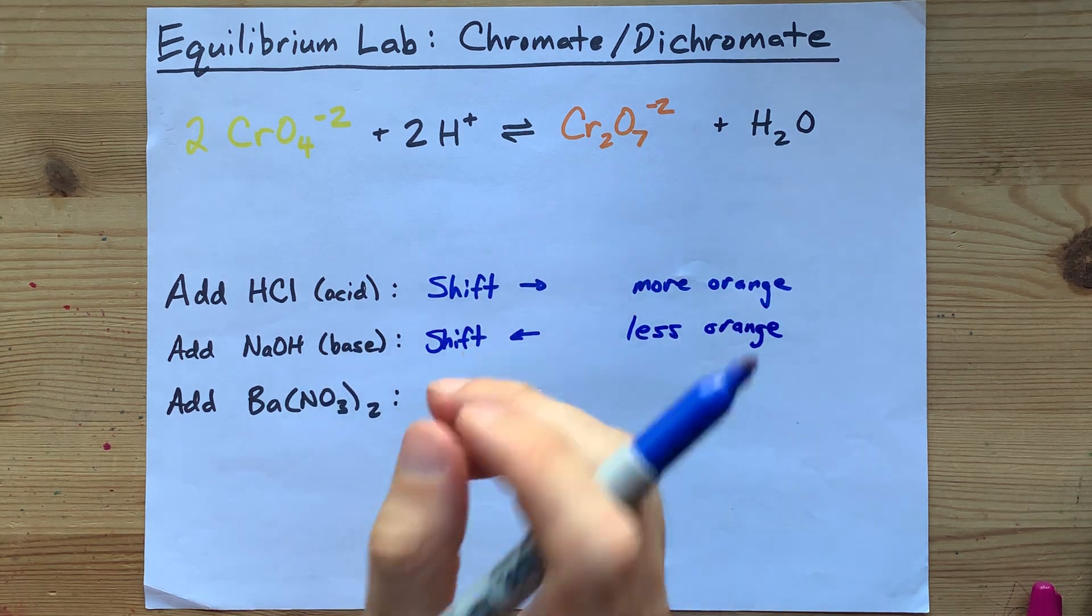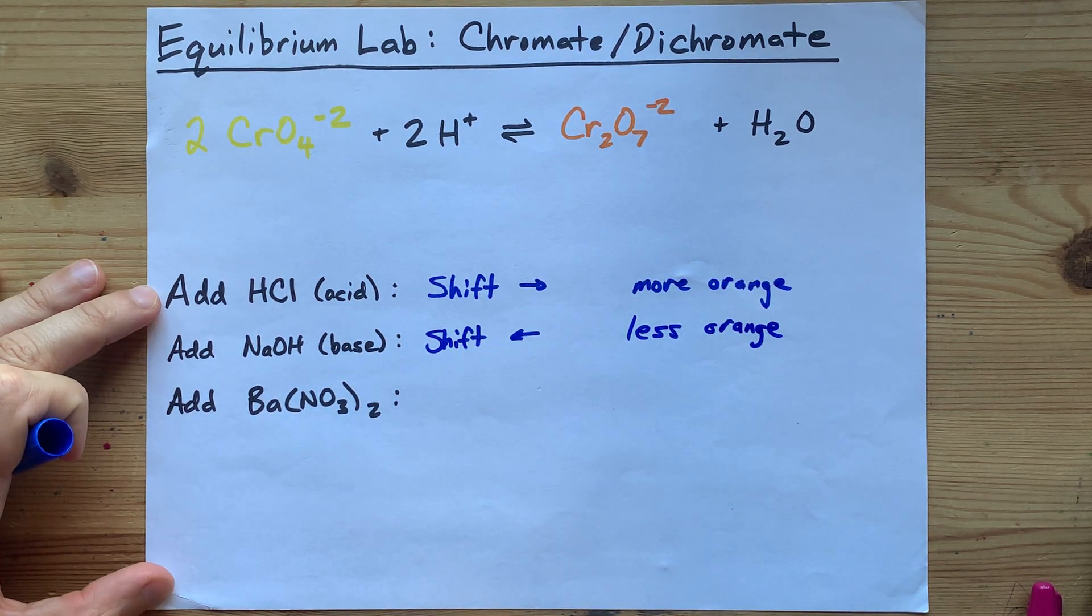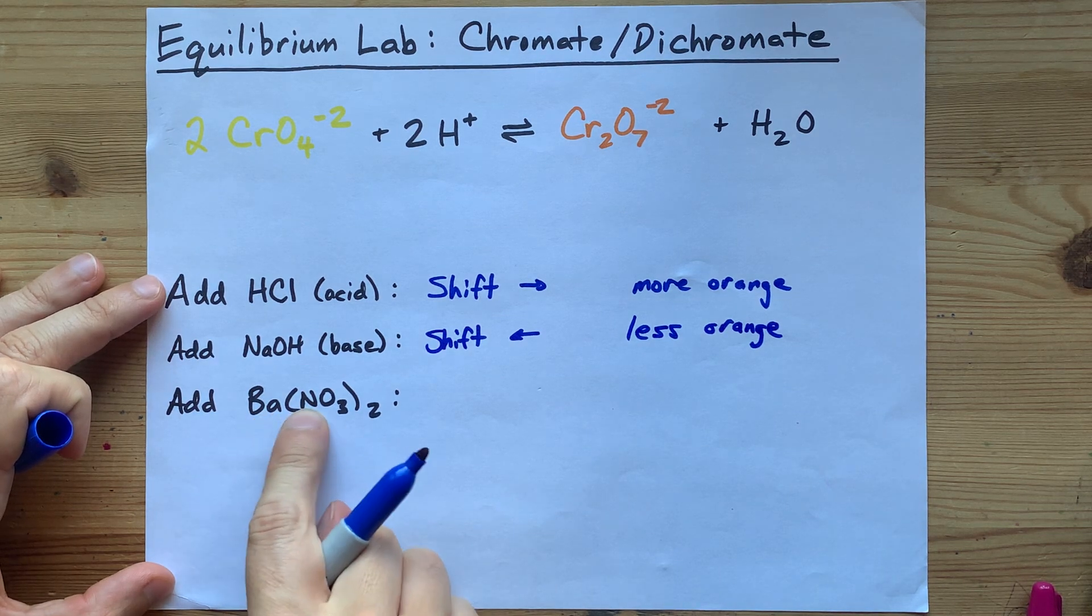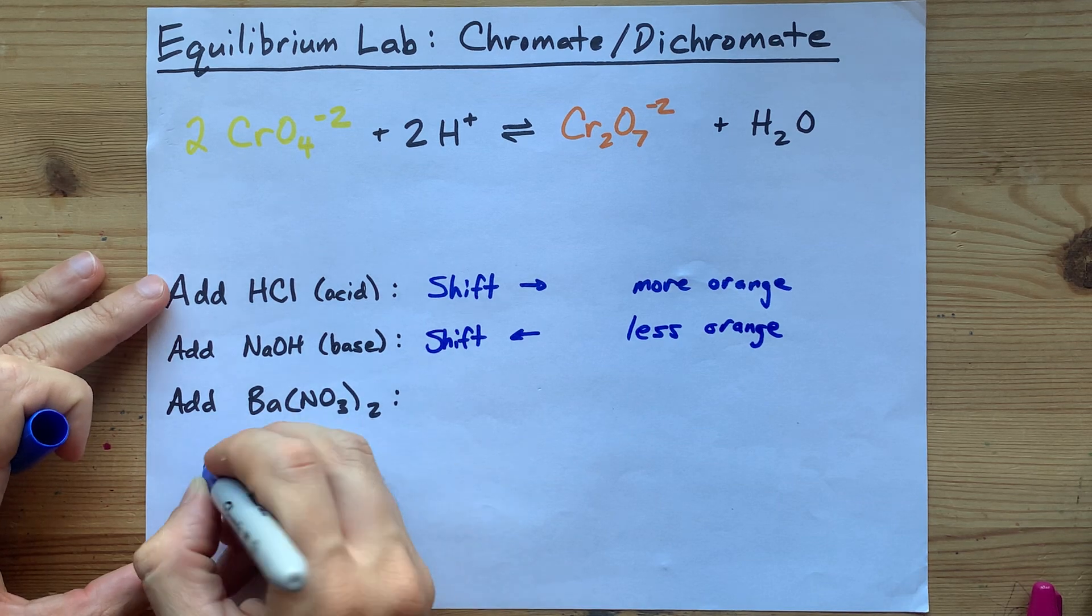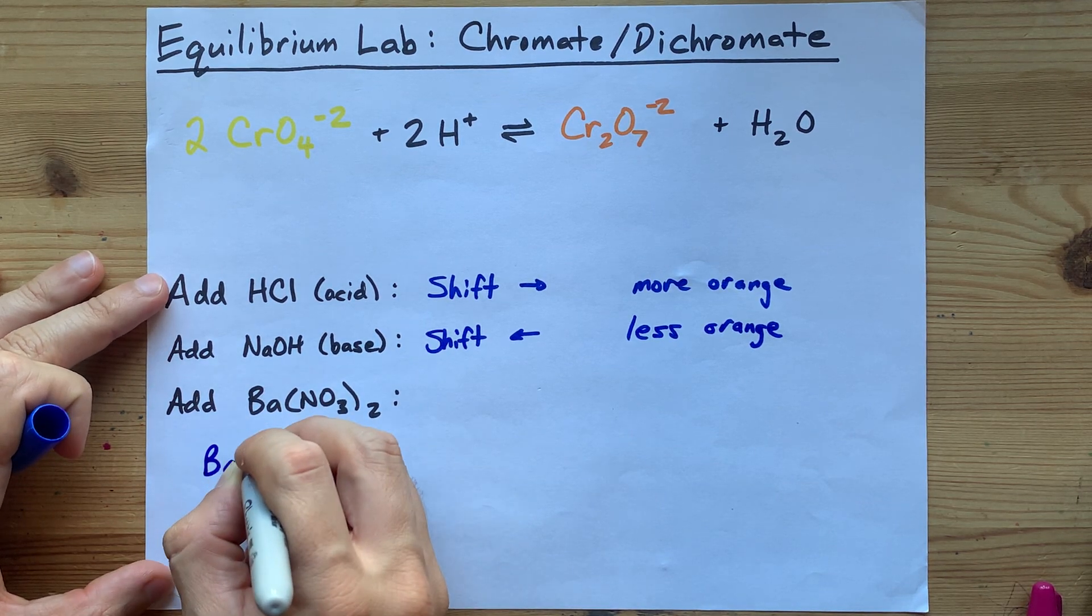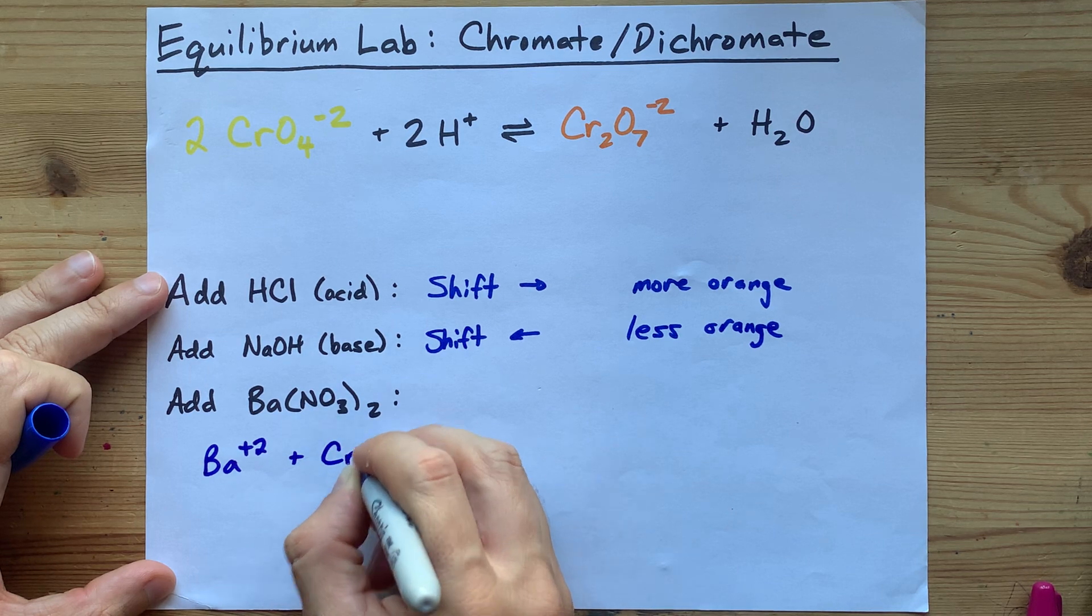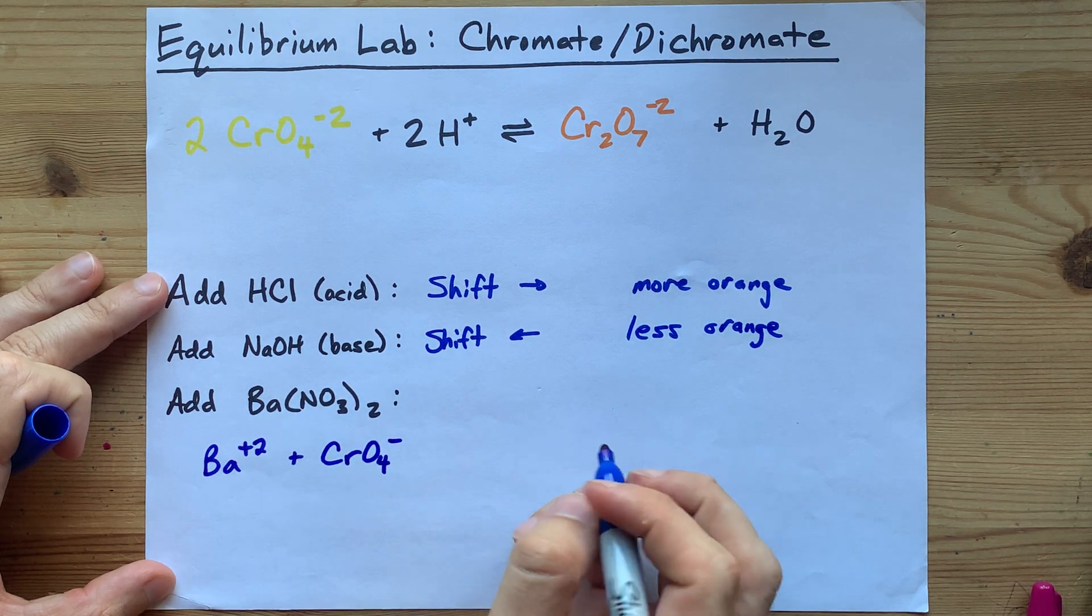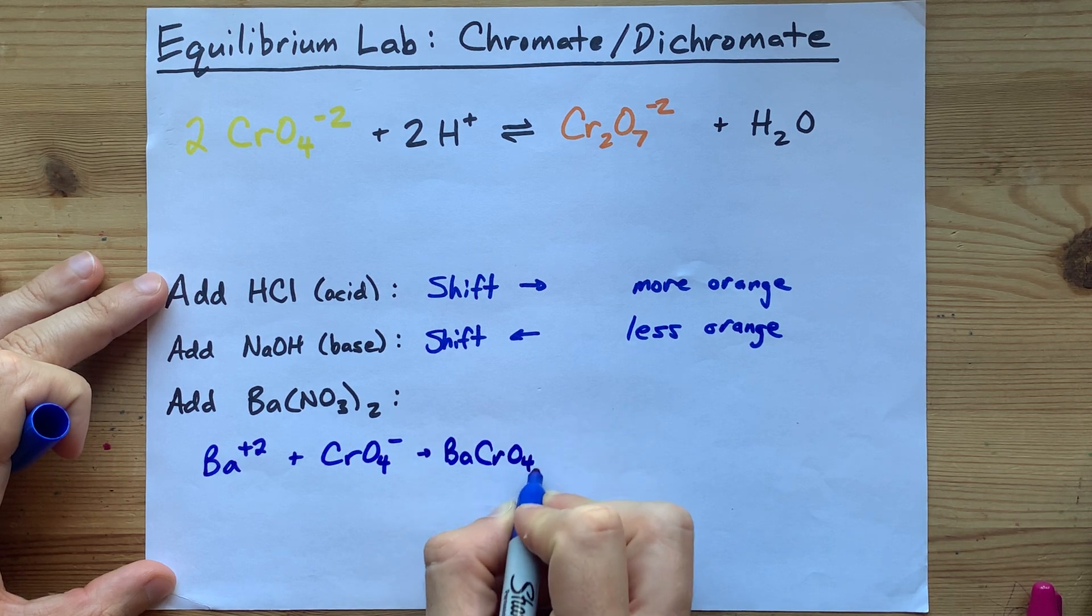The last and trickiest is adding barium ions. You'll almost certainly have to add barium nitrate. It's one of the few barium compounds that's actually soluble. And the Ba2+ ions inside of those will react with the CrO4- to make BaCrO4 solid.